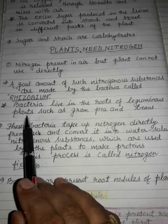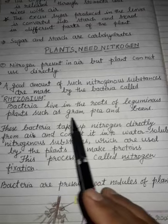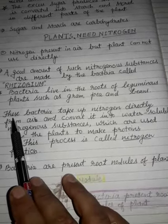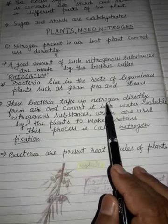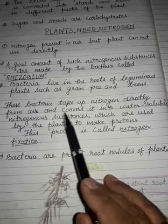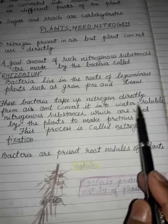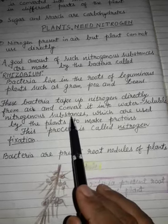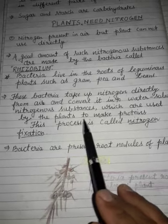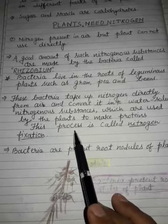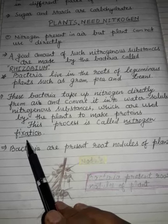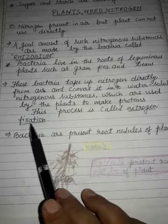Rhizobium is found in pulse plants such as gram, pea, beans, etc. These bacteria take up nitrogen directly from air and convert it into water-soluble nitrogenous substances which are used by the plants to make proteins. This process is called nitrogen fixation.